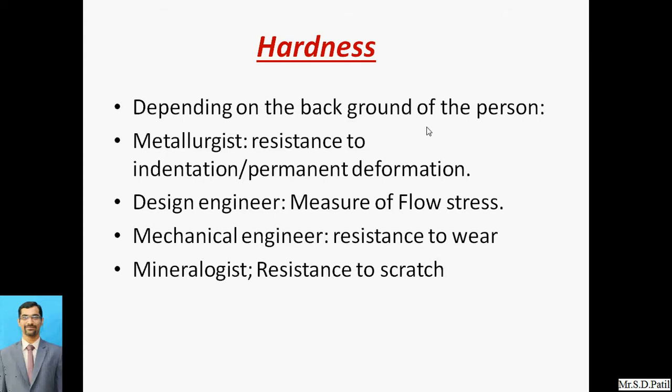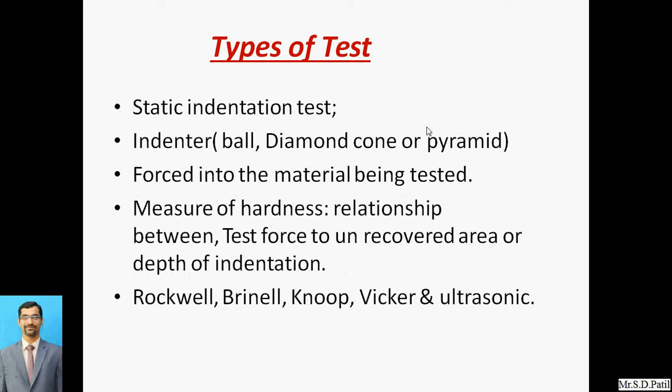We are going to calculate hardness for different kinds of metals. According to every person, the meaning of hardness is somewhat different. A metallurgist says hardness is resistance to indentation or permanent deformation. A design engineer says it is the measure of flow stresses. A mechanical engineer may say it is resistance to wear. The meaning varies person to person, but in metallurgy we say hardness is the resistance offered to permanent deformation or any kind of indentation.